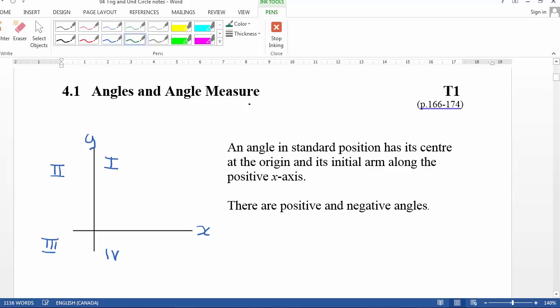So I'm reading here. It says an angle in standard position has its center at the origin. So there's the center and its initial arm along the positive x-axis. So whenever we measure angles in pre-calculus, we start from this positive x-axis. So that's the initial arm. And then there are positive and negative angles. So I'm just going to draw out. So here could be a terminal arm. There's my angle part in there. And this would be my terminal arm where it ends.